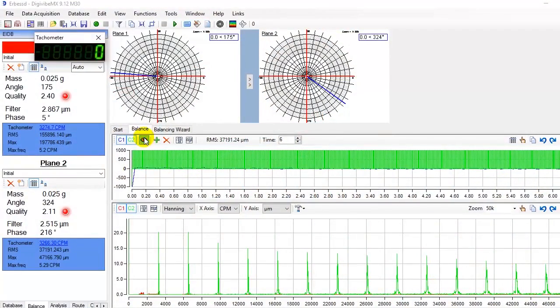We start off the machine again and we measure vibration from both planes. Repeat this process until you get the desired quality grade.